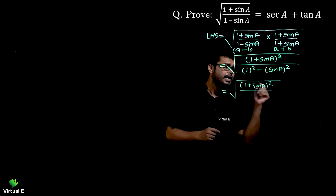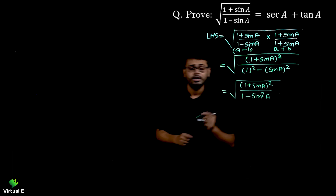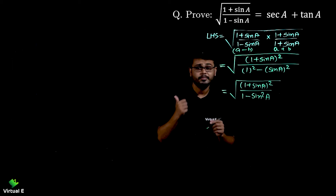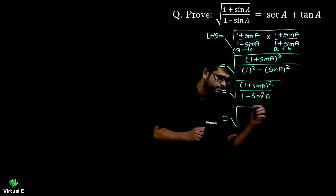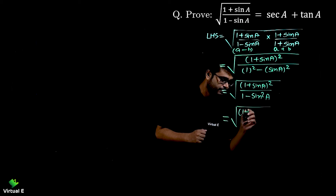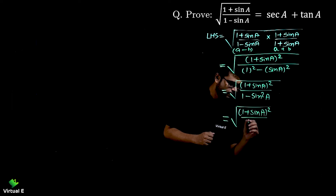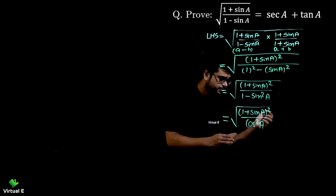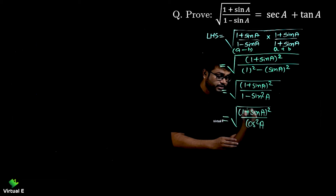So we have square root of (1 + sinA)² over (1 - sin²A). Now we are going to use the identity 1 - sin²A = cos²A. So let's write the square root of (1 + sinA)² over cos²A.